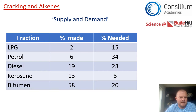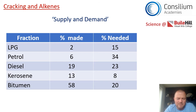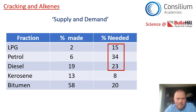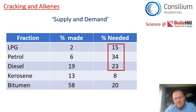Looking at the table: LPG — only 2% is produced by fractional distillation, but we need 15% for our homes. Petrol — only 6% is produced, but demand is 34%. Diesel similarly falls short. On the other side, kerosene produces 13% but we only need 8%, and bitumen produces a whopping 58% but we only need 20%.